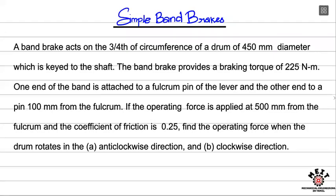Hello, in this video we will talk about a simple band brake. A band brake acts on 3/4 of the circumference of a drum of 450 mm diameter which is keyed to the shaft. That is a rotating drum of 450 mm diameter.